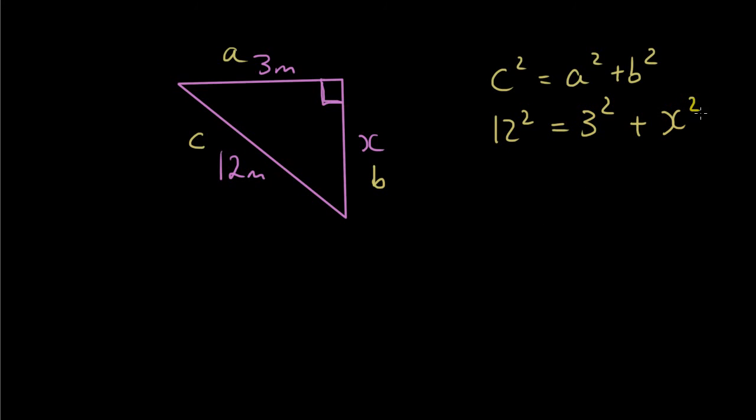So we now, because we're looking for x, we're gonna rearrange this formula. So we're gonna move the three squared to the other side. So it becomes twelve squared minus three squared.